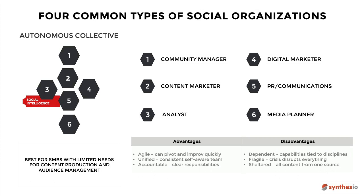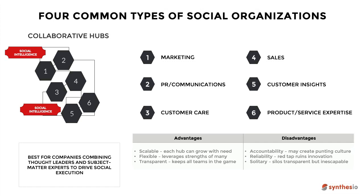The next type is the collaborative hub. Here we look from a team perspective rather than individual employees. The hub includes standards, marketing, PR, communications, customer care and sales, customer insights, and product service and expertise. Social intelligence is plugged in at the top and bottom of this hub, which is best for companies wanting to combine thought leadership and subject matter expertise to drive their social execution.